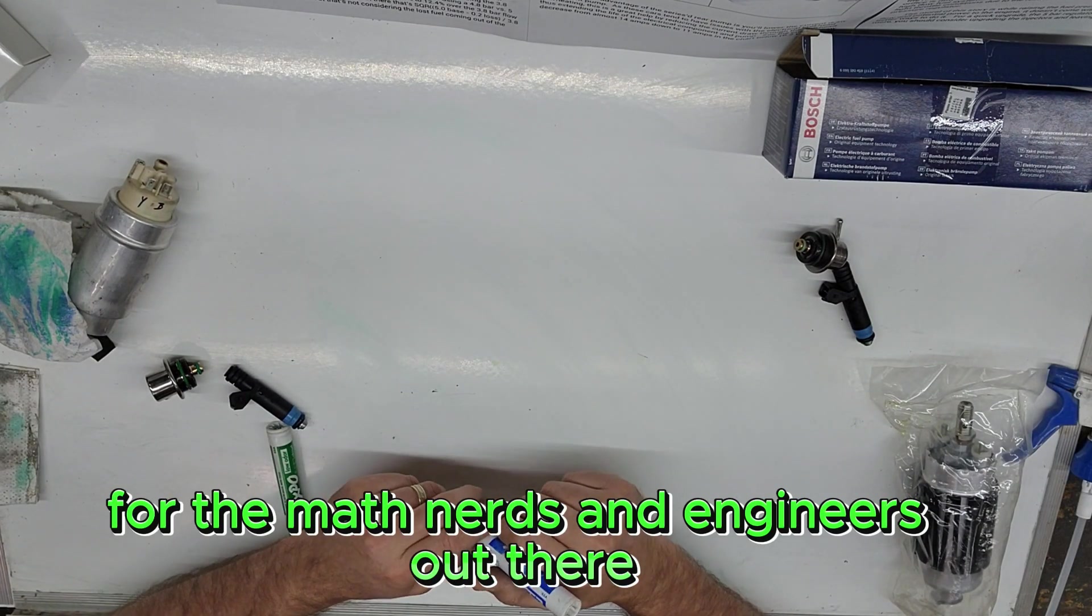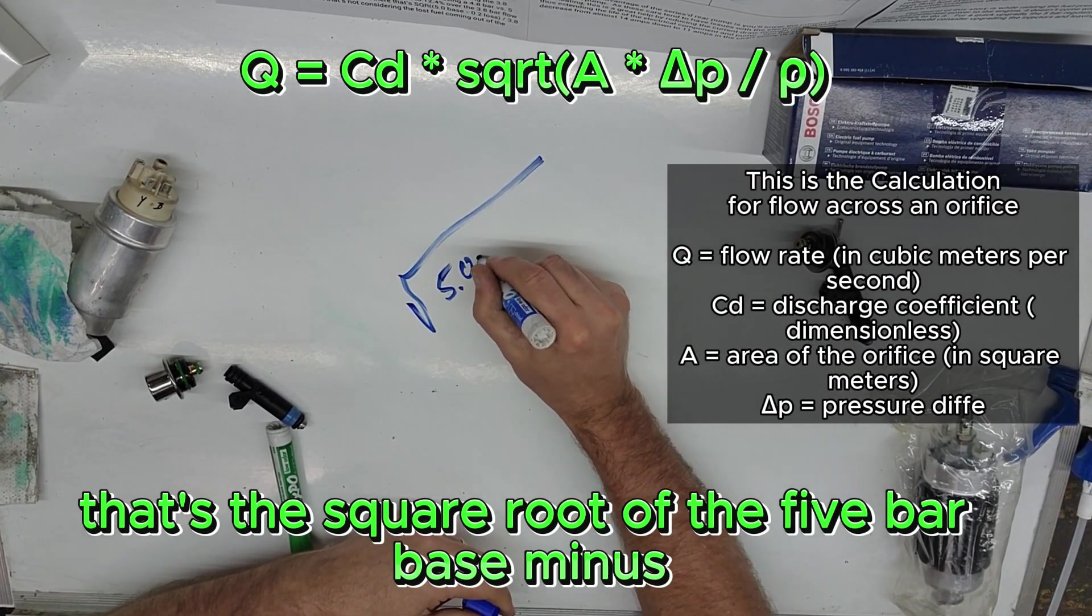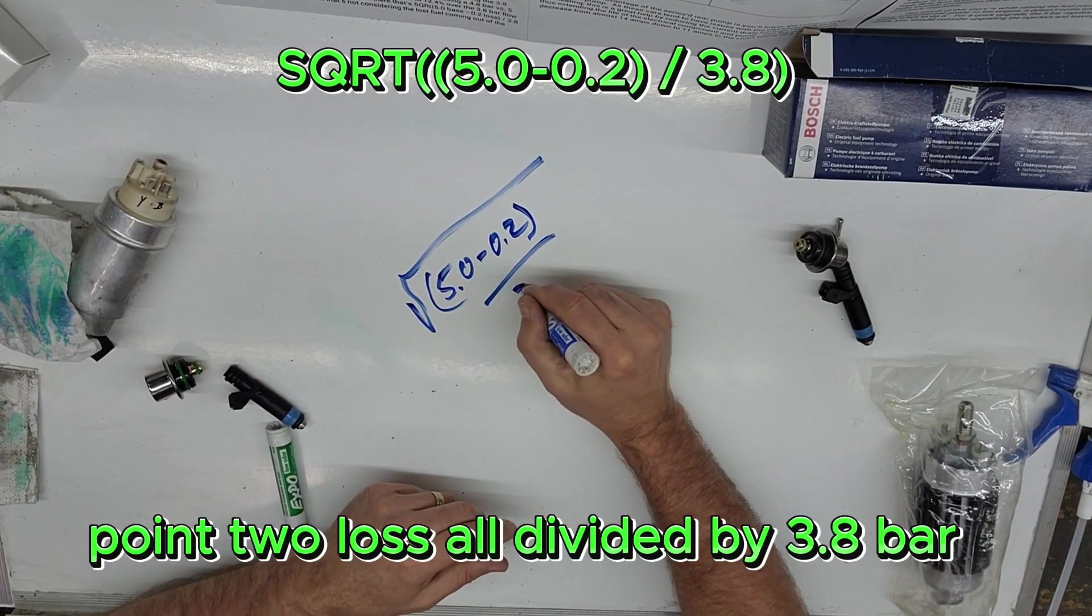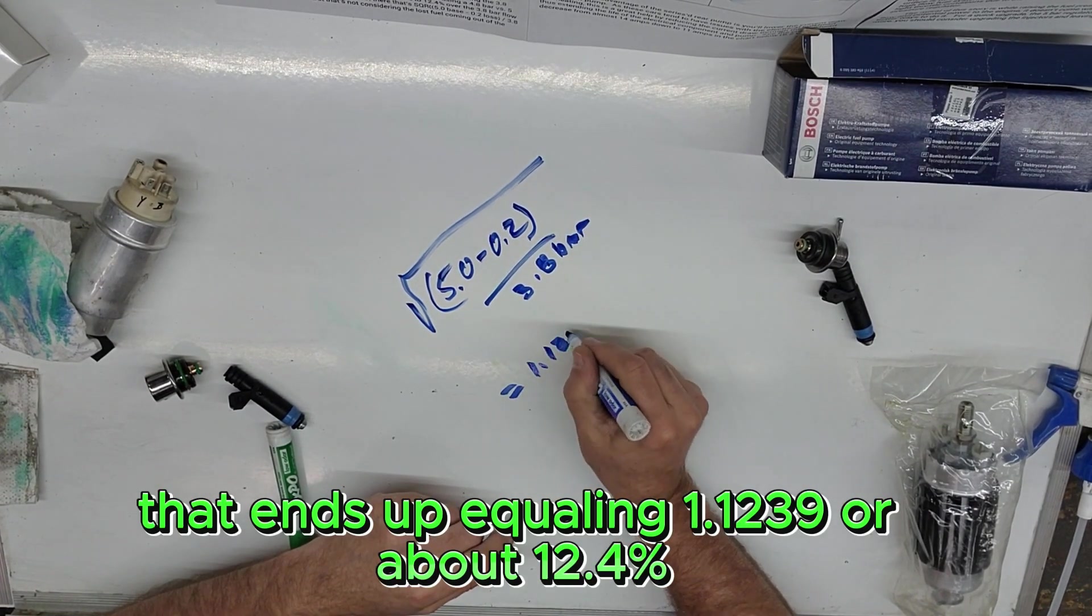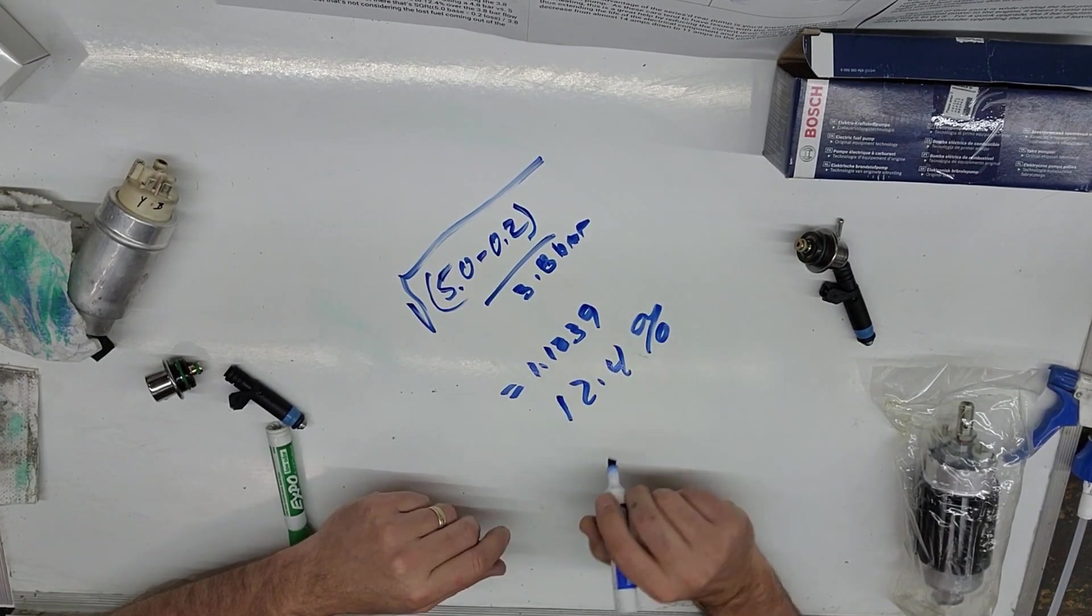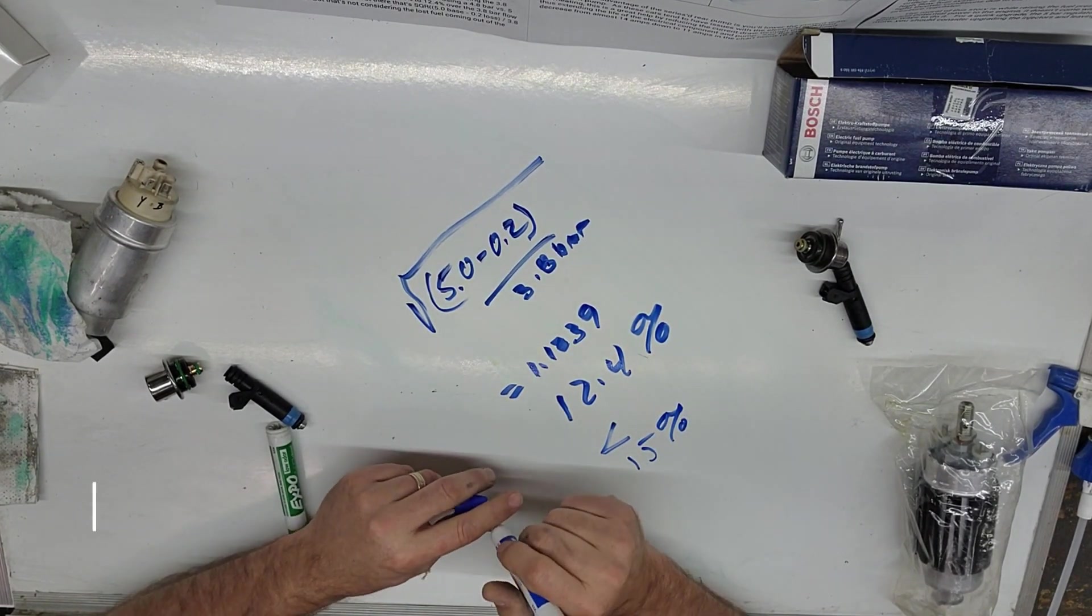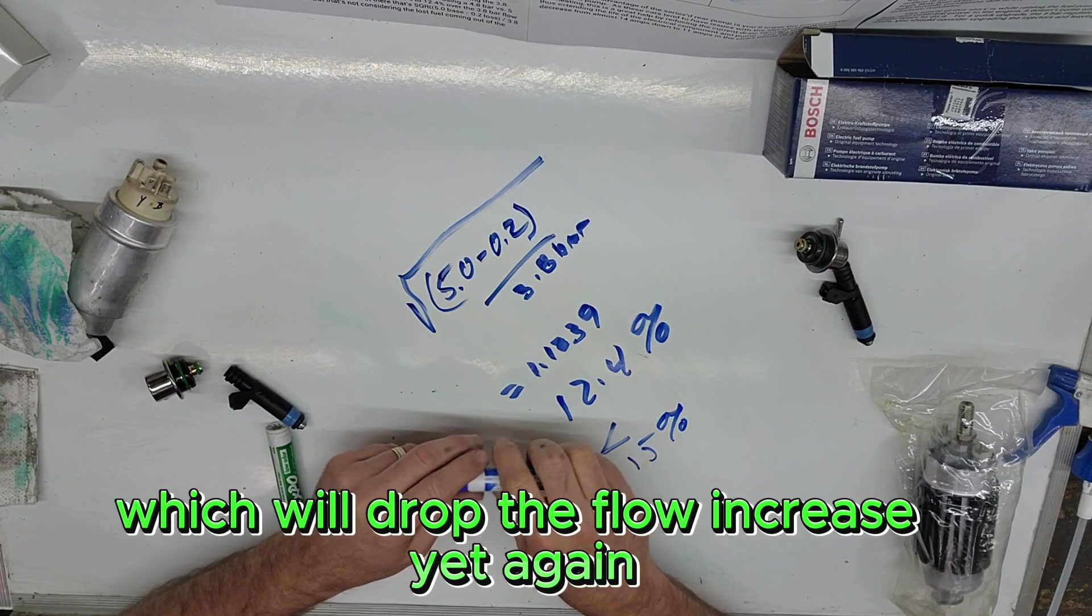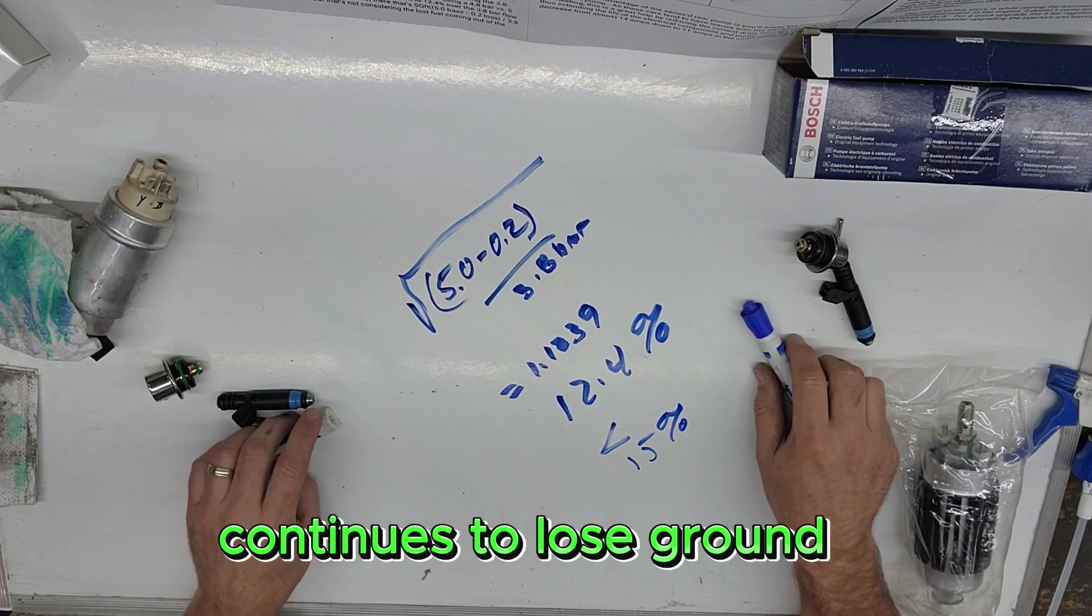For the math nerds and engineers out there, that's the square root of the 5 bar base minus 0.2 loss all divided by 3.8 bar. That ends up equaling 1.1239 or about 12.4 percent. That's less than 15 percent. That's not even considering the fuel loss coming out of the bleed off valve in the tank, which will drop the flow increase yet again. Trying to run an even higher boost on a 5 bar setup continues to lose ground.